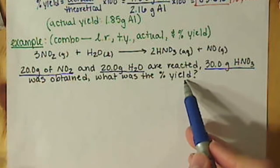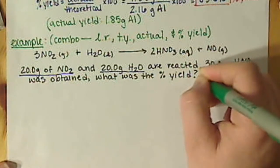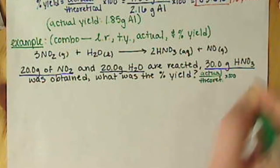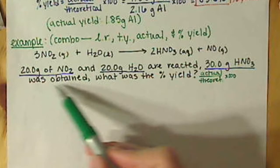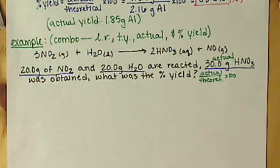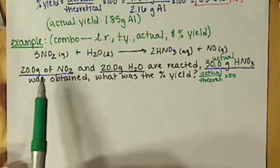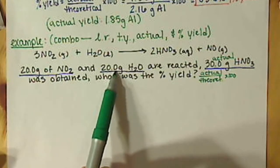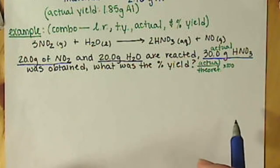So first off, in order to figure out the percent yield, percent yield is our actual divided by our theoretical times 100. So our actual yield is going to be our 30 grams, because that's what was obtained when the experiment was performed. So that's our actual. Then we have to figure out our theoretical yield. So our theoretical yield is going to be between these two calculations. We're going to have to determine our limiting reactant between our 20 grams of nitrogen dioxide and our 20 grams of water. So here's where we have to do those two different calculations, and we're going to follow that pathway of grams of A to moles of A to moles of B to grams of B.